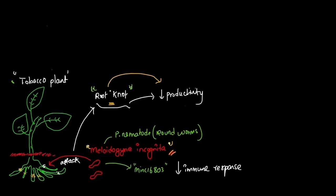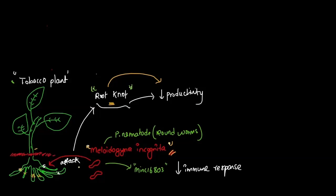Thus, root knot disease leads to a reduction in the productivity of this particular plant. So in this case, modern science applies the principle of RNA interference in order to solve this problem. For that, we firstly have to identify a gene — any gene which is very vital for this Meloidogyne incognita in order to survive in the host plant.